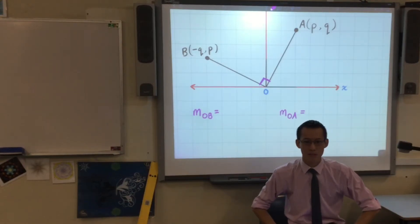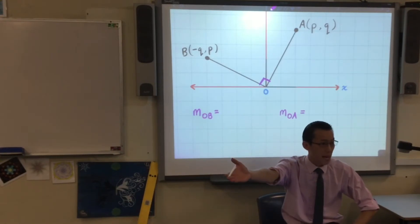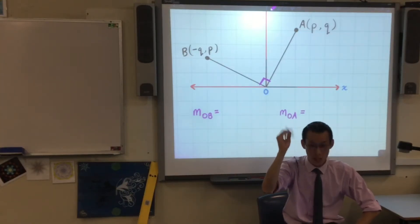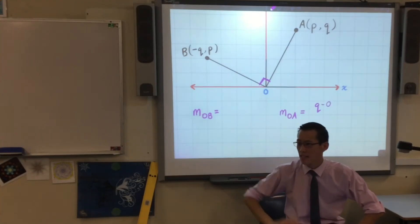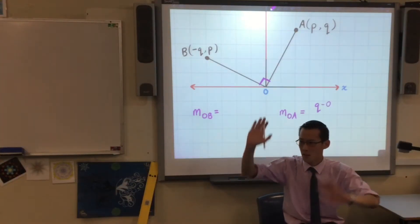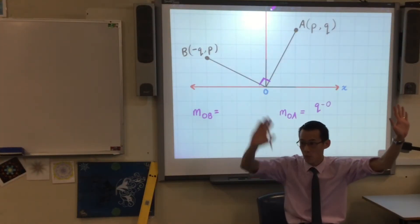This one's easy, the first one. For OA, what's the rise? You have the triangle still there. It's Q, isn't it? If I were to be really precise, it's actually Q take away zero, because rise is, what is rise? It's Y2 minus Y1, right?